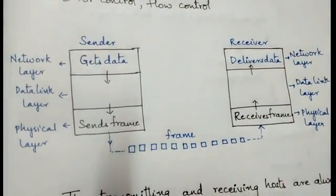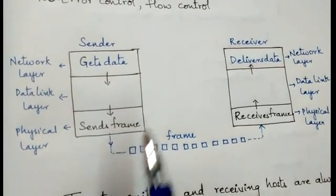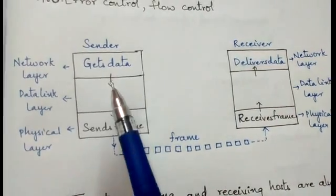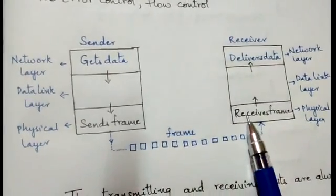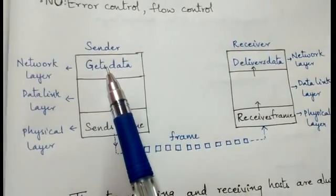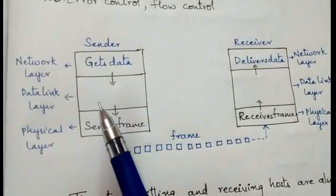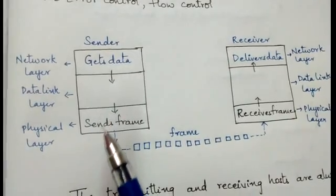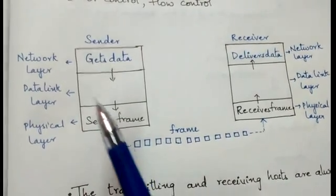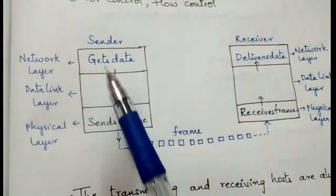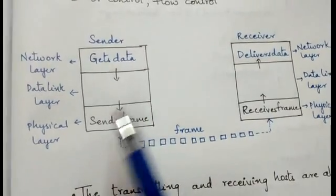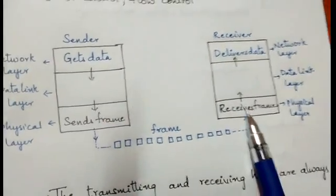Let's see what happens in the Simplest protocol. We have a sender and a receiver. As this is a unidirectional protocol, data is transferred from sender to receiver. The network layer gets the data and transfers it to the data link layer. From the data link layer it goes to the physical layer. The work of the data link layer is to make frames, and the physical layer sends the frame.